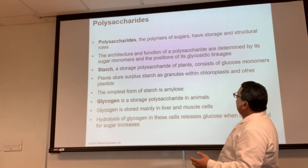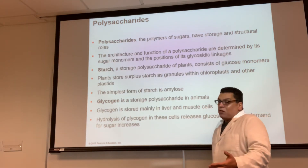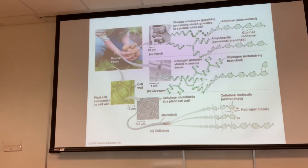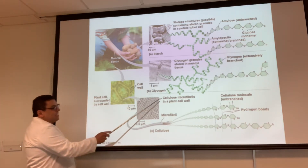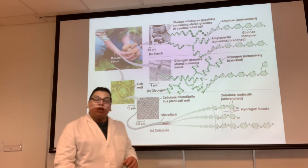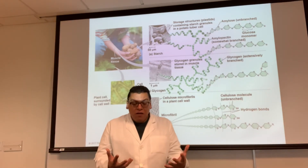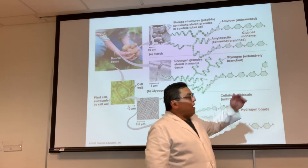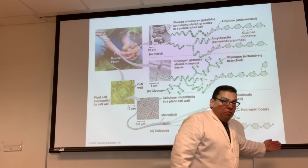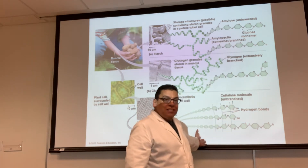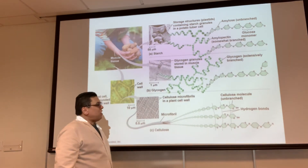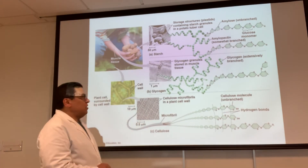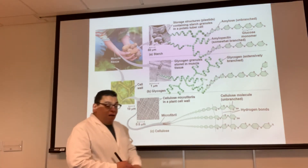Plants can also use glucose to make a structural molecule for the cell wall. Cellulose is the cell wall of plants. The cell wall is a plant cell secretion — it's outside of the cell membrane. It is a polysaccharide called cellulose and it provides protection for the plant cell.